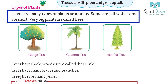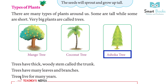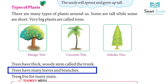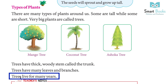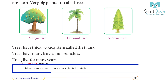Types of plants: there are many types of plants around us. Some are tall while some are short. Very big plants are called trees — mango tree, coconut tree, Ashoka tree. Trees have a thick woody stem called the trunk. Trees have many leaves and branches, and trees live for many years.